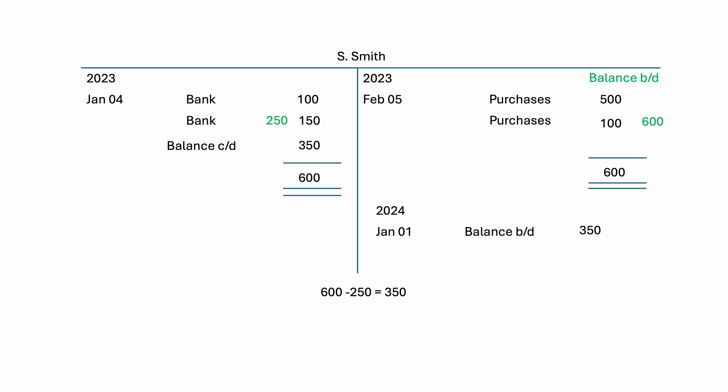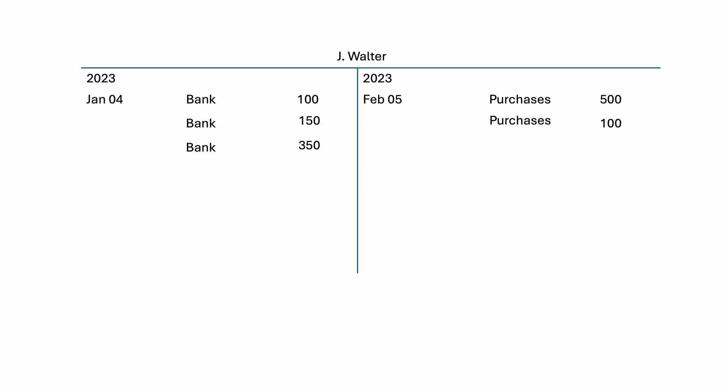Another example of a trade payable account: the total on the debit side is 600, and the total on the credit side is 600. The totals on both sides are equal. Therefore, the balance is 0. Closing off this account is done by putting the total of 600 on both sides and underlining. Since the balance of this account is 0, this means that the business has paid the amount owed to the trade payable.